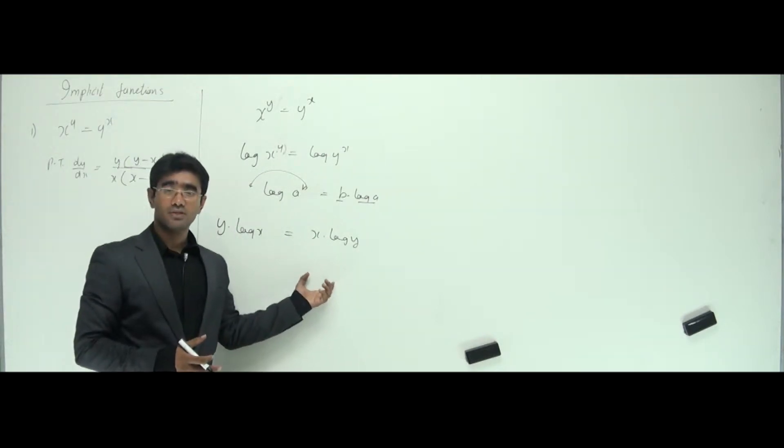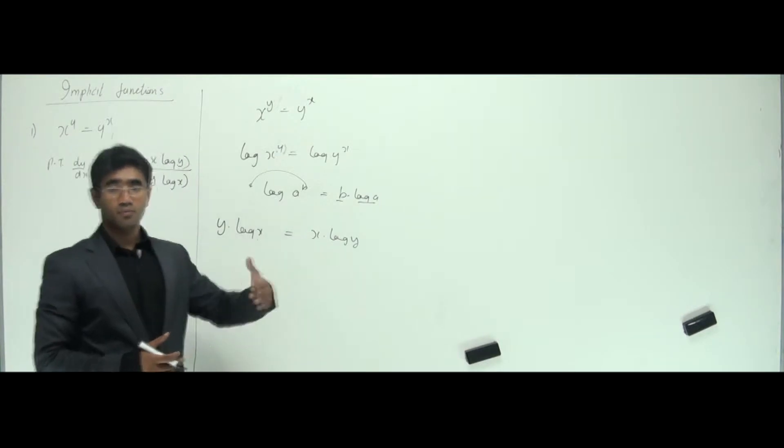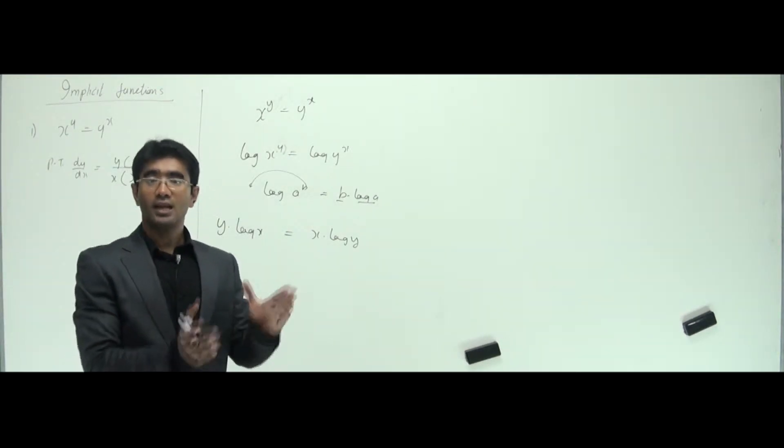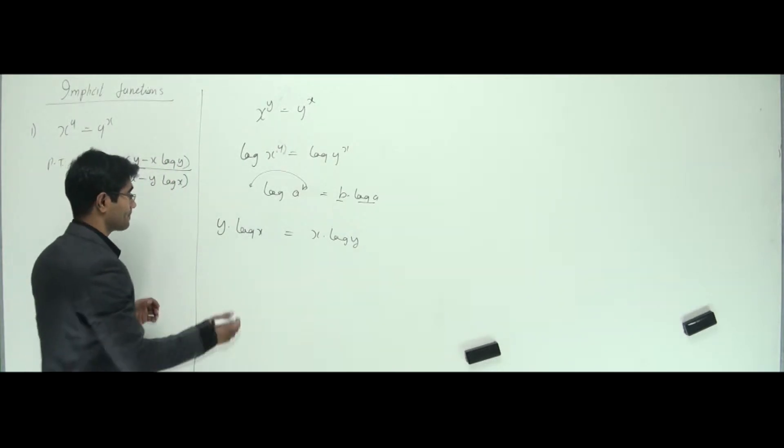And now it looks like x and y are mixed up. So it looks like more an implicit function, right? So now differentiate using more regular rules what you learned, and make sure that you have dy by dx on the left hand side. That's all this whole thing.